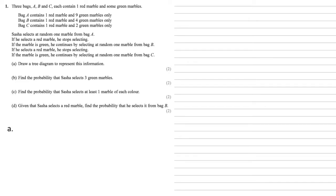For part A, we need to draw a tree diagram to represent this information. So let's start with bag A. We've got two possibilities, a red marble or a green marble. As there are 10 marbles, one of them is red. Probability of red is 1 out of 10. The probability of green is 9 out of 10.